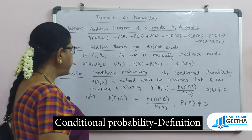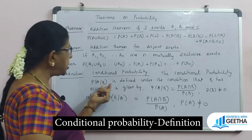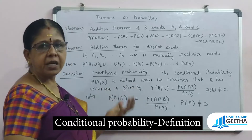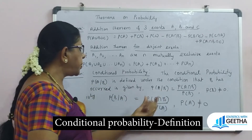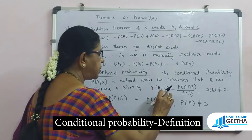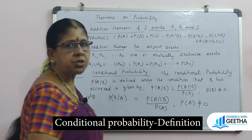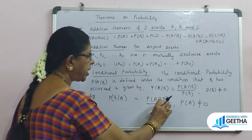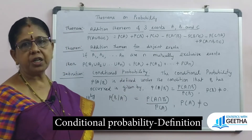Now, the definition of conditional probability — this is a very important definition. The conditional probability of A given B is defined under the condition that event B has already occurred. P(A|B) equals P(A intersection B) divided by P(B), provided P(B) is not equal to 0. Similarly, P(B|A) equals P(A intersection B) divided by P(A), provided P(A) is not equal to 0.